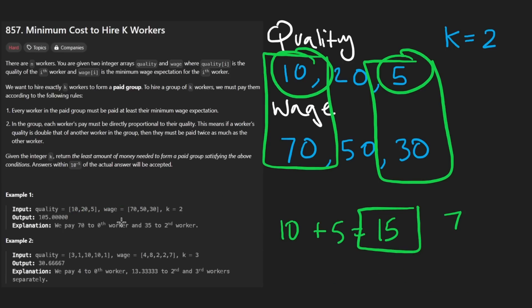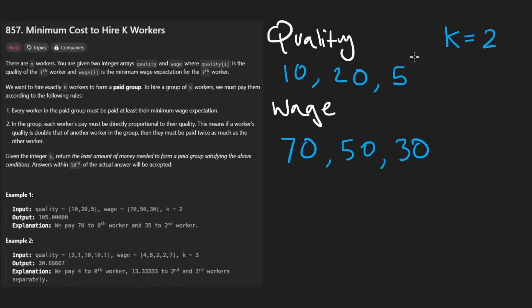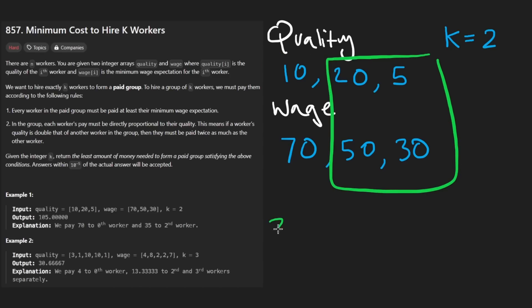If we instead chose these two workers, we would get a higher total. Let me quickly show it to you. We take this ratio: 30 over five, that's six. Then this ratio: 50 over 20, that's 2.5. Obviously this has a smaller ratio, so this one actually has the bigger one.